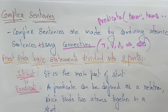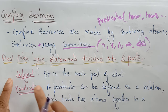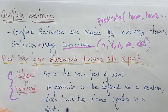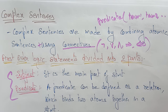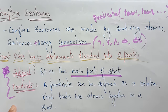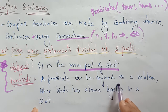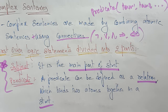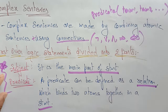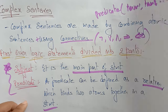Now, first-order logic statements are divided into two parts: subject and predicate. Whatever sentence we take — whether atomic or complex — it is divided into two parts: subject and predicate. The subject is the main part of the statement. The predicate is a relation which binds two atoms together in a statement, giving information about the subject.